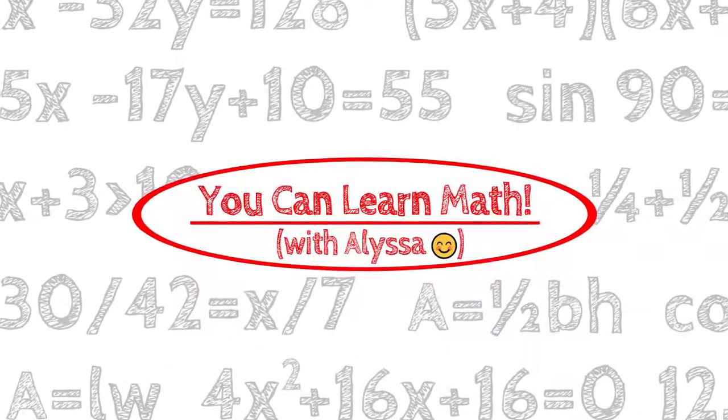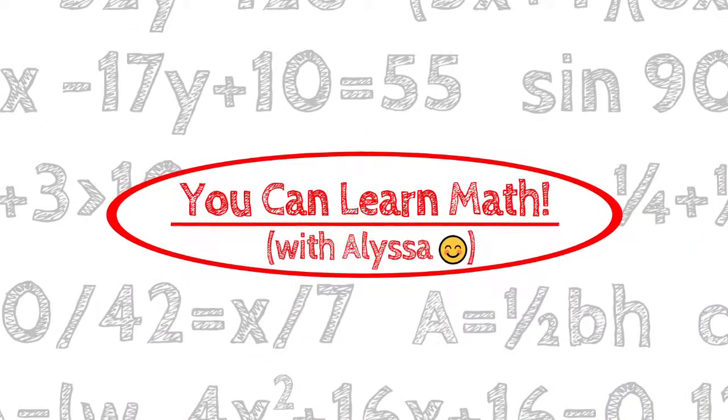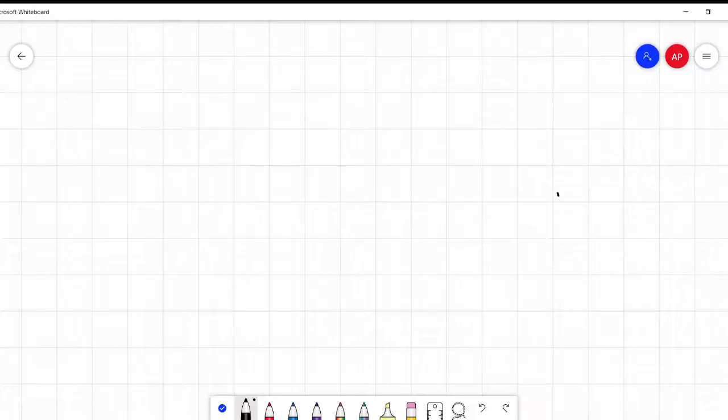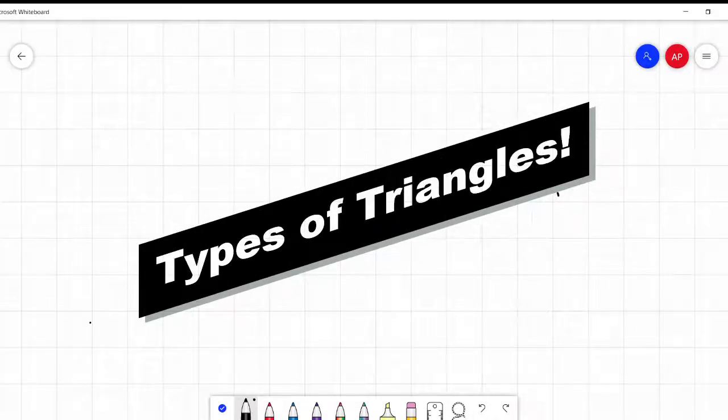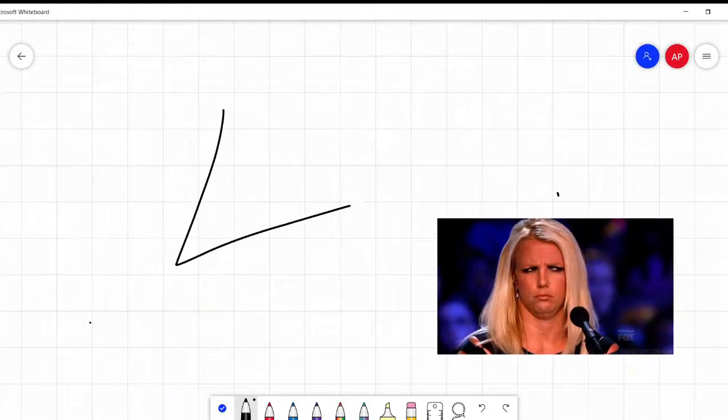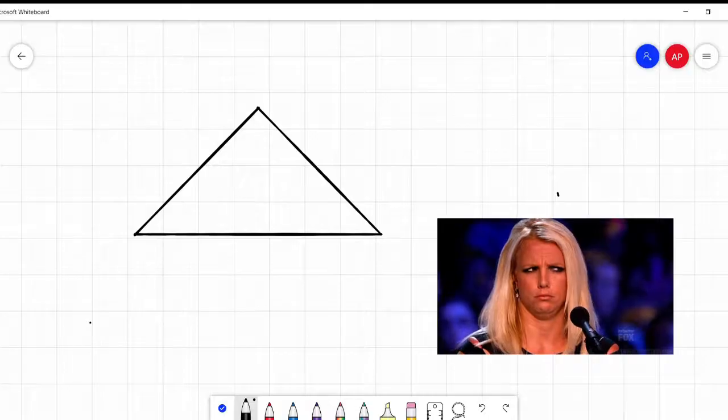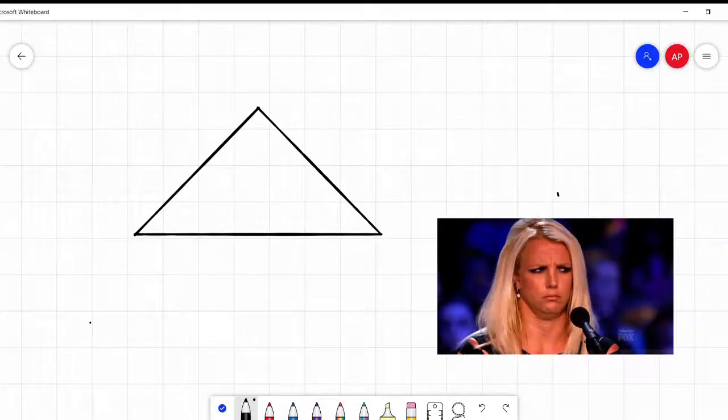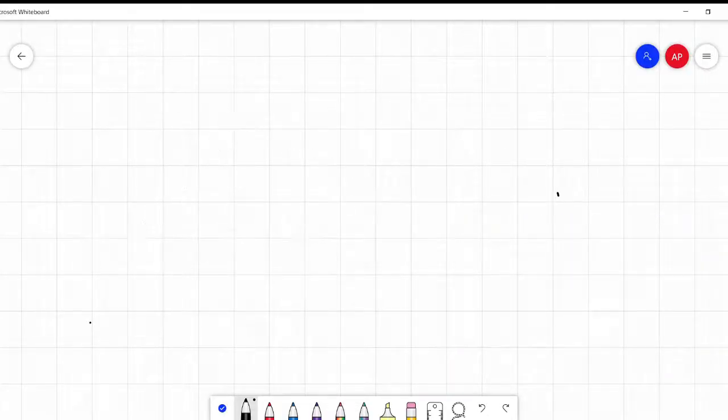Hi everyone, it's Alyssa and welcome to You Can Learn Math. Today is about different types of triangles. The main three kinds of triangles - you say different kinds of triangles, isn't just a triangle a triangle? Yes and no.